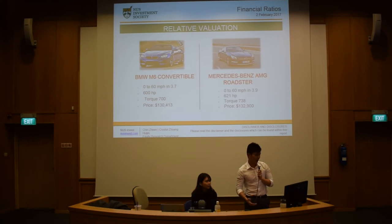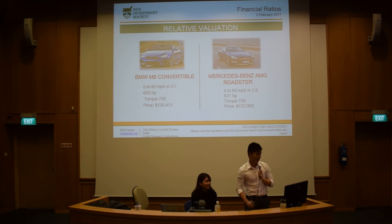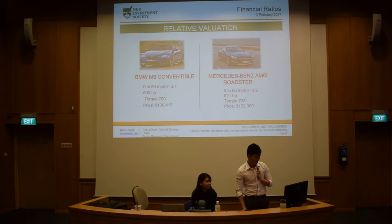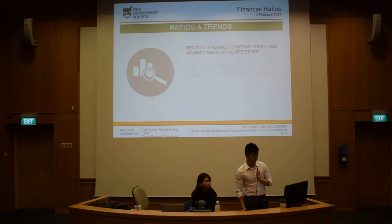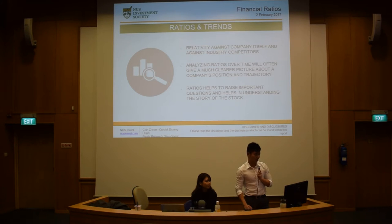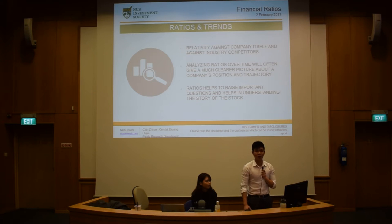This is just an example for people who like cars. Much like buying a stock, cars have their own sort of ratios or performance metrics — like how fast it accelerates, or horsepower and torque. As you can see, they're quite similar, so their price is also likely quite similar. You really have to take note of relativity — both against the company itself and against industry competitors.